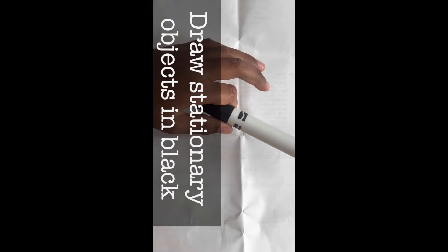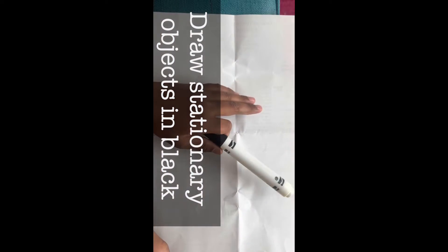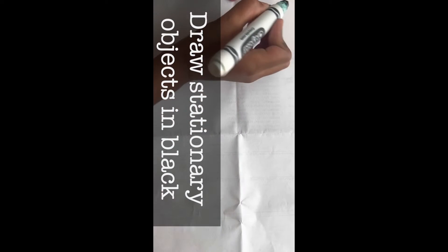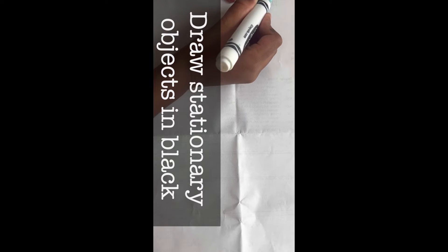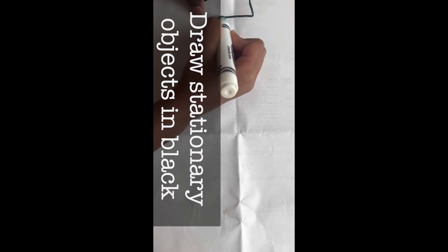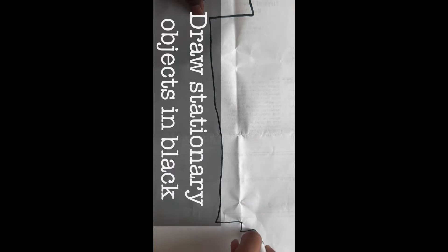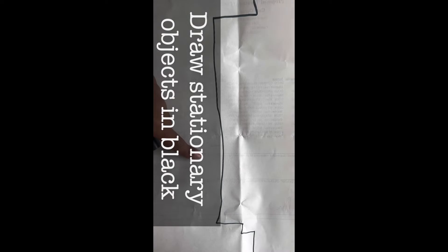And let's get started now. First, you draw stationary objects in black. So for example, like this. I'm going to zoom out on my paper. So I'll just do something like this. And good.